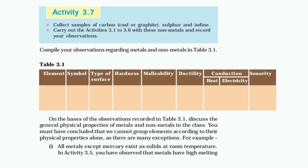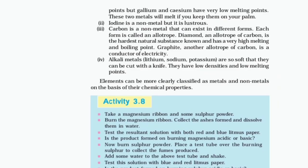For example: all metals except mercury exist as solids at room temperature. In Activity 3.5, you have observed that metals have high melting points, but gallium and cesium have very low melting points. These two metals will melt if you keep them on your palm.